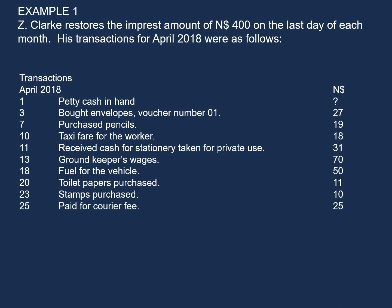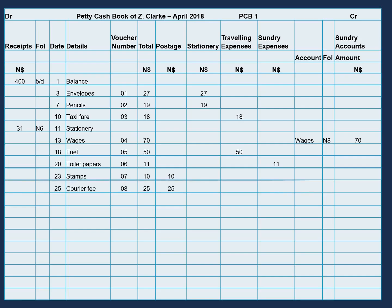On the 25th, paid for courier fee, $25. In the date column we enter 25, the description in the details column will be courier fee, our voucher number will be 08, and the total is $25. Our courier fees we will classify under postages.